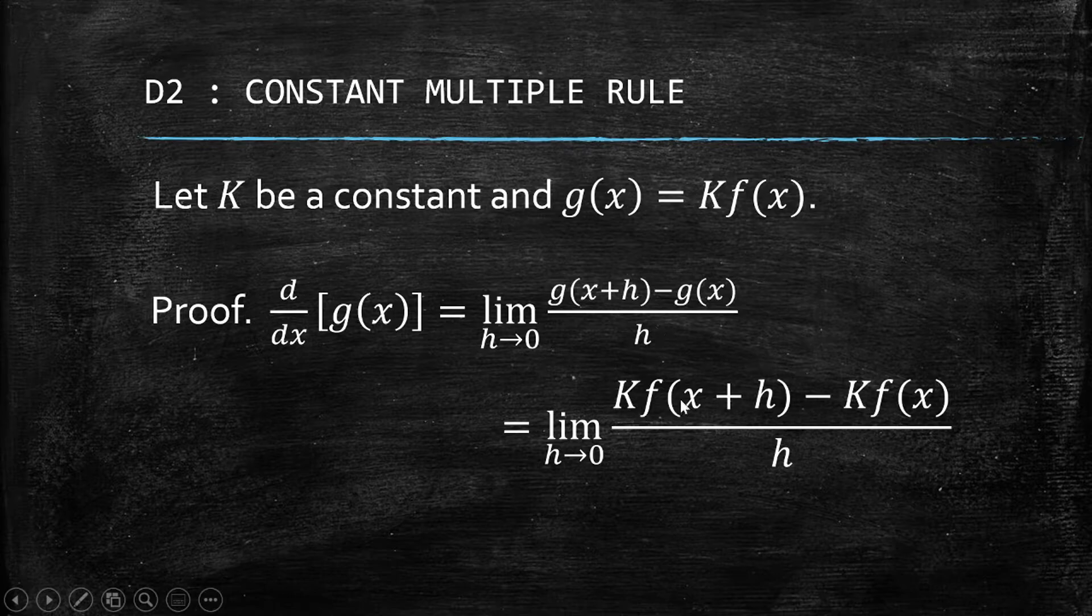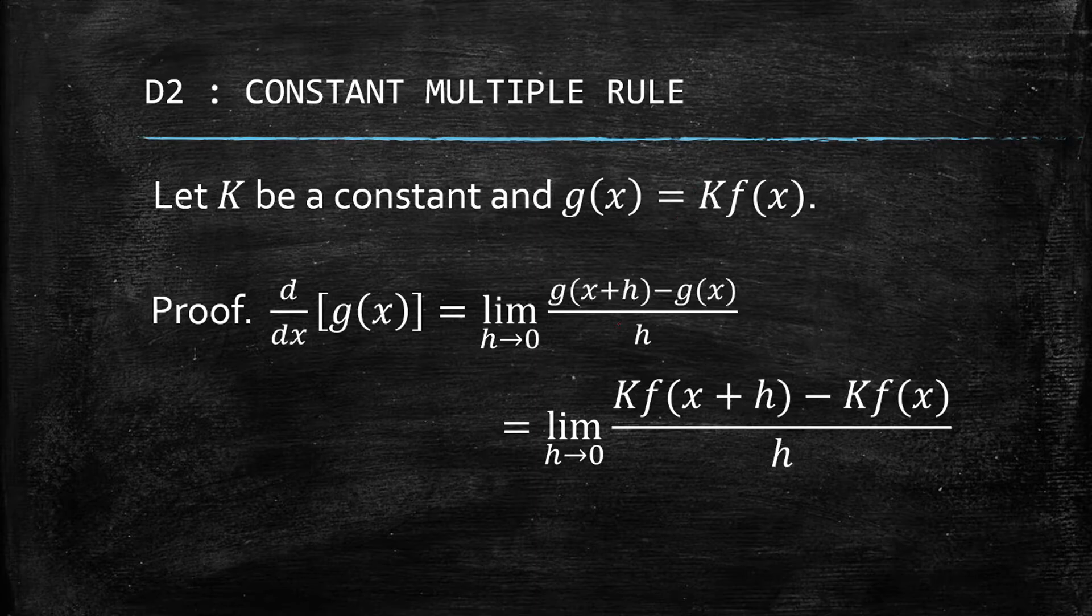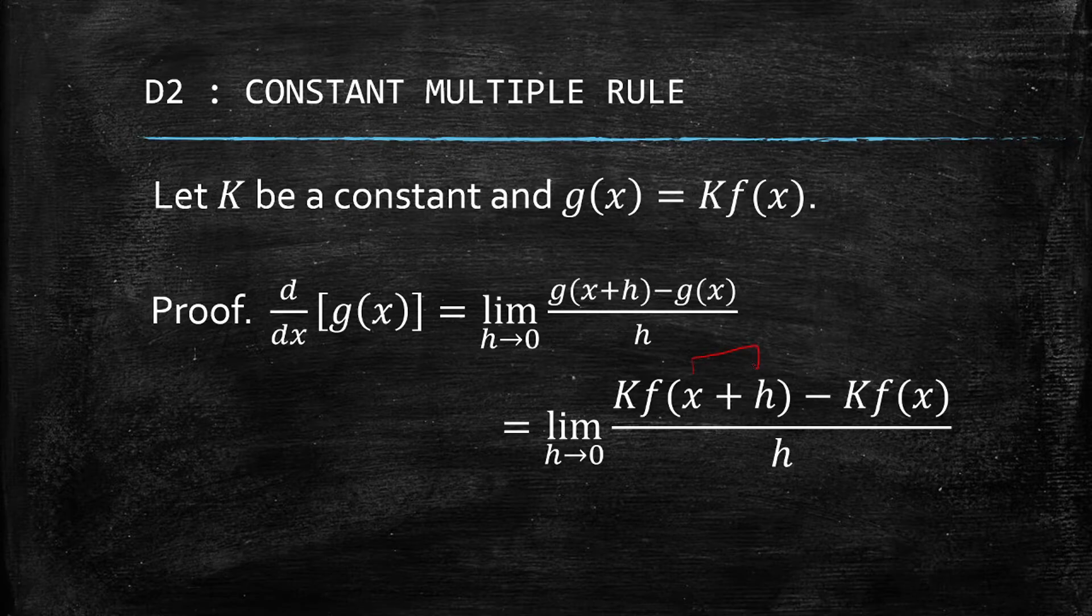It is actually K times f(x+h), and g(x) is actually K times f(x). So what happened here is that we simply added h on the input values.